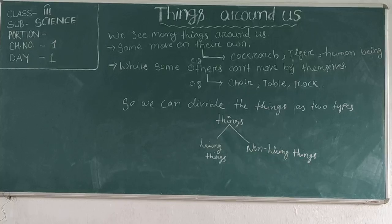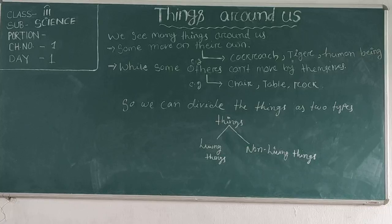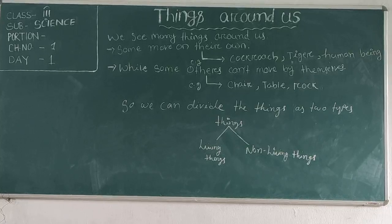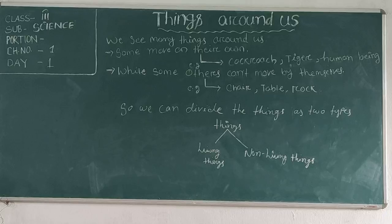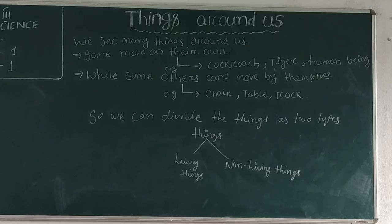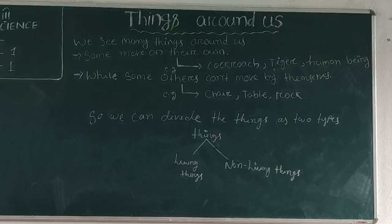So we see many things around us. Some move on their own — for example, animals, reptiles, or insects, like tigers, rabbits, and human beings. While some others cannot move by themselves — for example, a pebble, chalk, or a wall. Some things cannot move by themselves but move only when you push or pull.